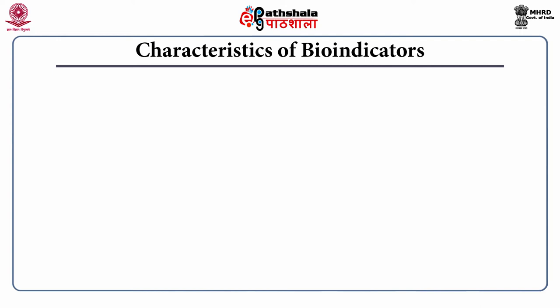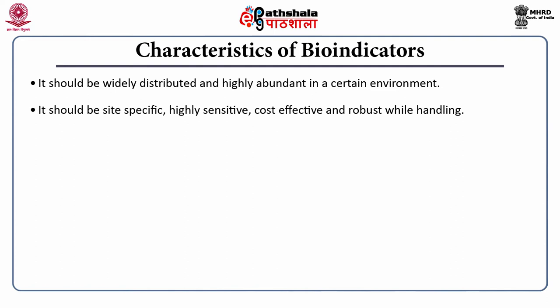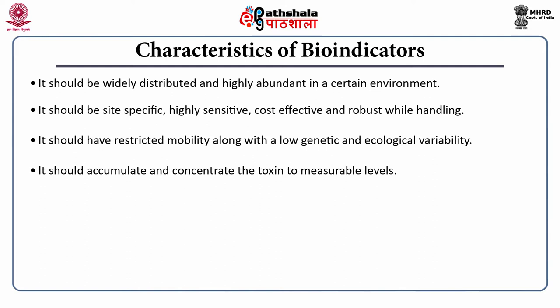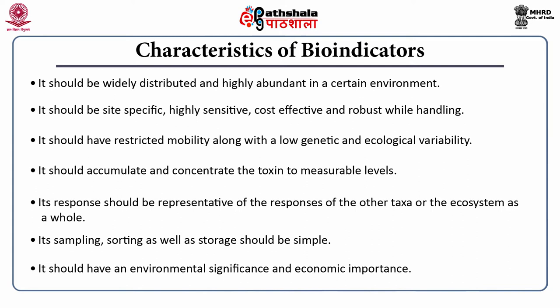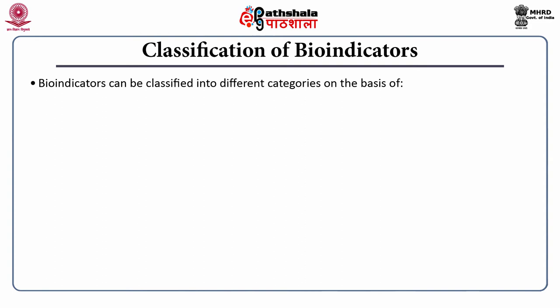Characteristics of bio-indicators. An ideal bio-indicator requires certain characteristics: wide distribution, high abundance in the environment, site specificity, high sensitivity, cost effectiveness, and being reversed by handling. It should also have restricted mobility along with low genetic as well as ecological variability. It should accumulate and concentrate the toxins to measurable levels. Its response should be representative of the responses of other taxa as well as the ecosystem as a whole. The sampling, sorting, and storage of the bio-indicator should be simple. It should have environmental significance and economic importance. The key characteristics of bio-indicators are social importance, practicability, abundance, representativeness, specificity, and sensitivity.